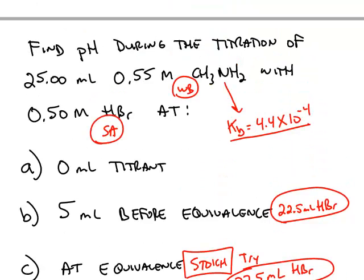Point A on the titration curve is before we add any titrant at all. So all we have is 0.55 M weak base. We've already seen how to calculate that pH.